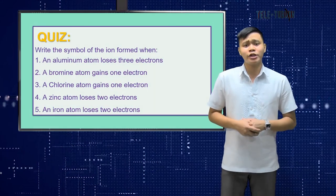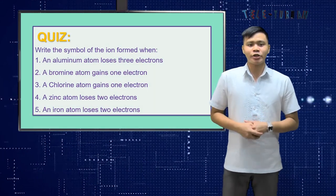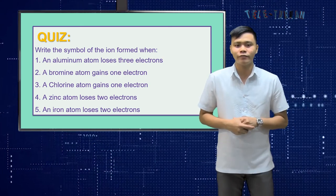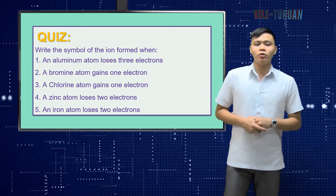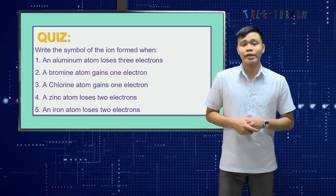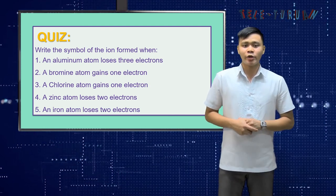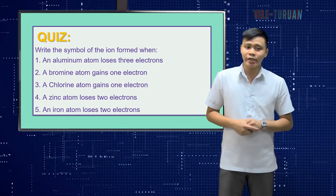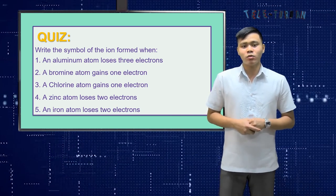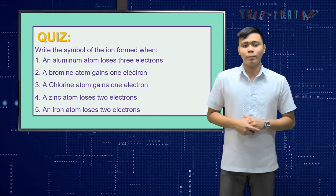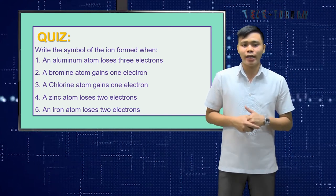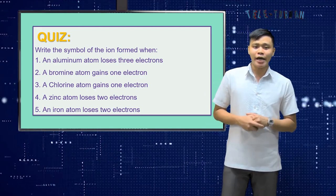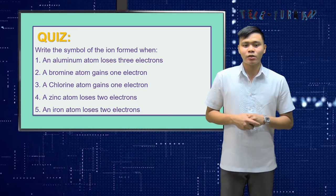Now, let us see if you have learned something today. Let's have a short quiz. Write the symbol of the ion formed when: Number 1 — an aluminum atom loses 3 electrons. Number 2 — a bromine atom gains 1 electron. Number 3 — a chlorine atom gains 1 electron. Number 4 — a zinc atom loses 2 electrons. Number 5 — an iron atom loses 2 electrons.